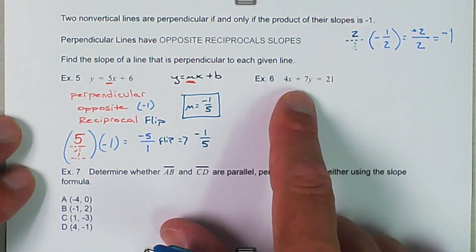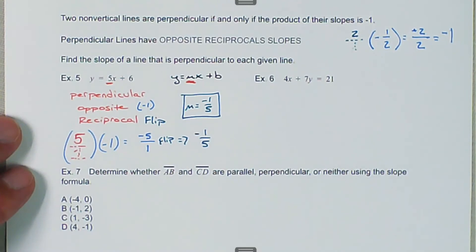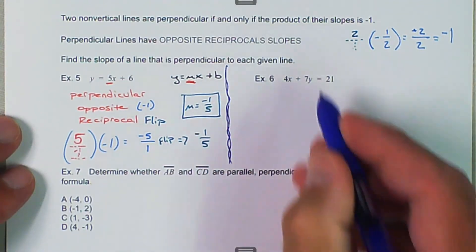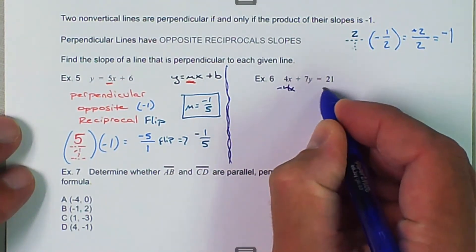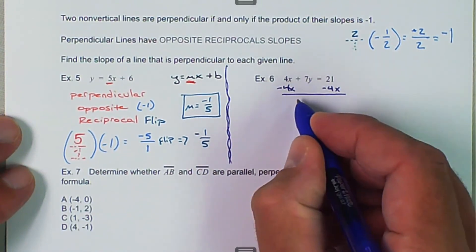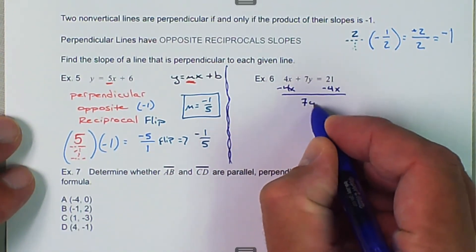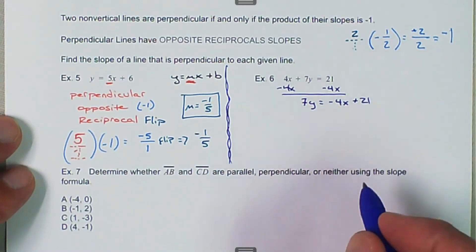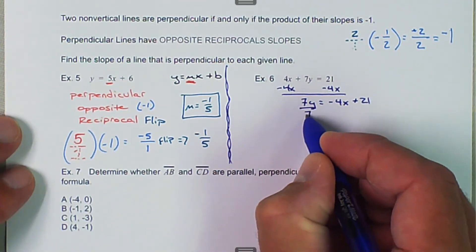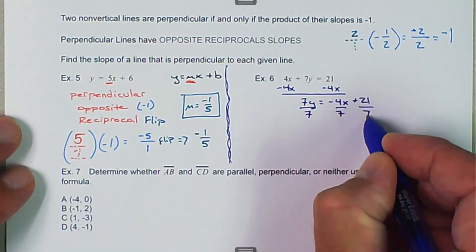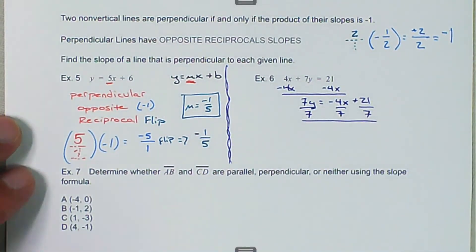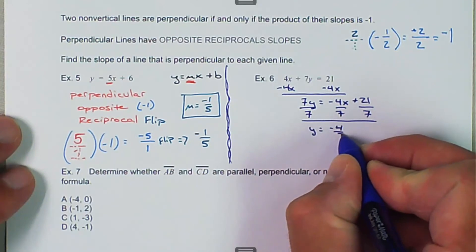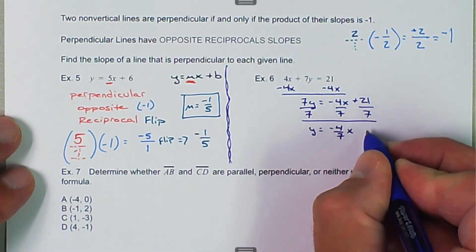Next we have another example, and this is in standard form, but we want to change it to y equals mx plus b. So the first thing we want to do is solve to get y by itself. So I'm going to subtract 4x from both sides. And then we get 7y is equal to negative 4x plus 21. And then I want to get rid of the 7 there, so I'm going to divide everything by 7. And in this case we get y equals negative 4 over 7x, and then 21 divided by 7 is 3.